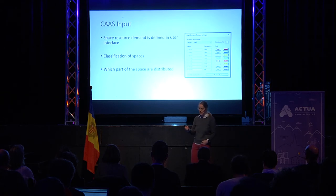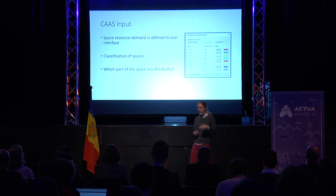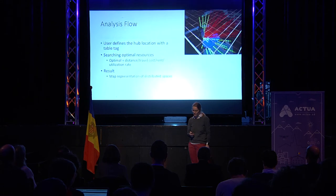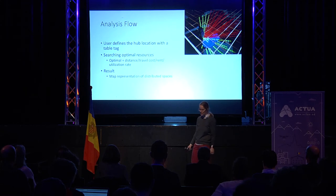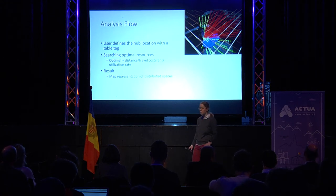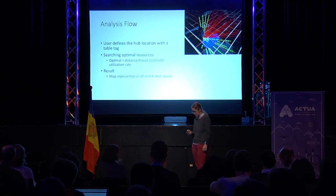The user defines different space resources and the level of distribution, and then we need to classify the spaces — that's the simplification we need to do in the model. The analysis flow goes so that the user defines the location of the school hub with the CityScope table deck, and then the model searches for an optimal combination of distributed spaces. As a result, we see a map presentation of the solution.